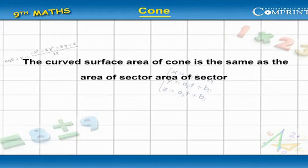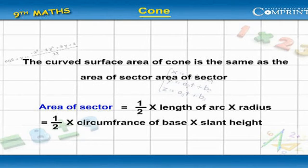Curved surface area of cone. The curved surface area of cone is the same as the area of sector. Area of sector equal to 1 by 2 into length of arc into radius.